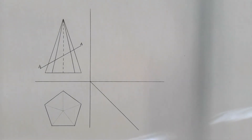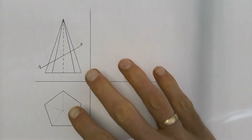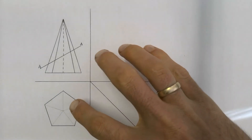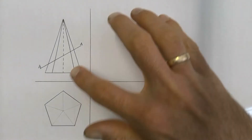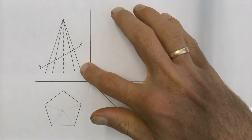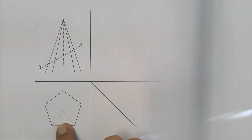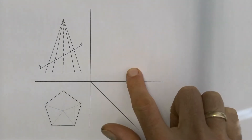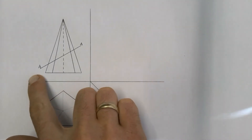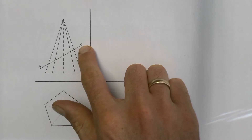For this drawing we've been given a pentagonal pyramid in the top view and the front view. The question requires a sectional top view and a sectional left view using the given cutting plane AA.